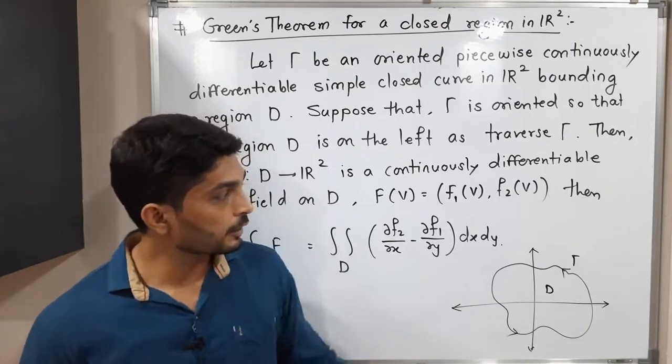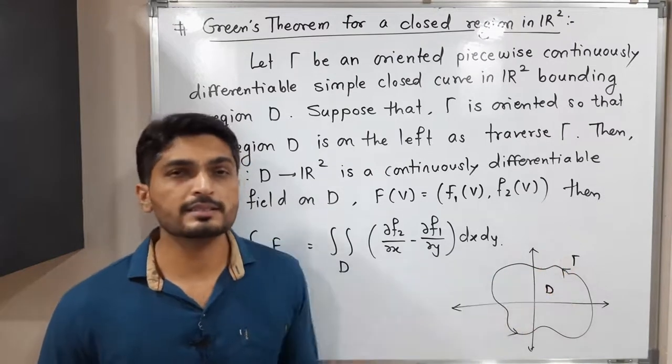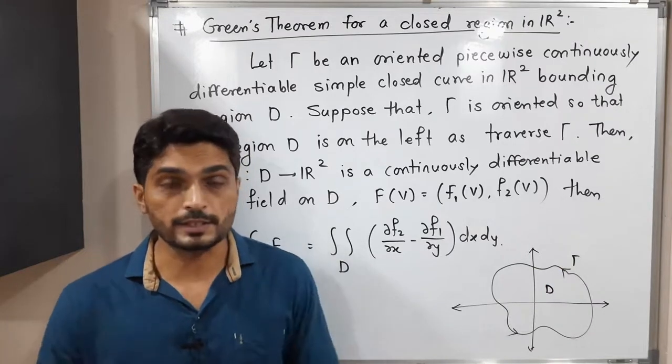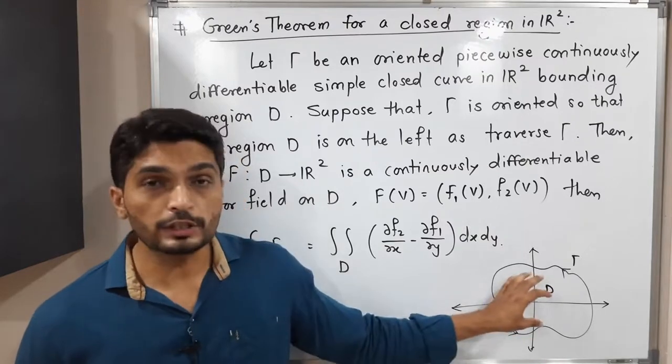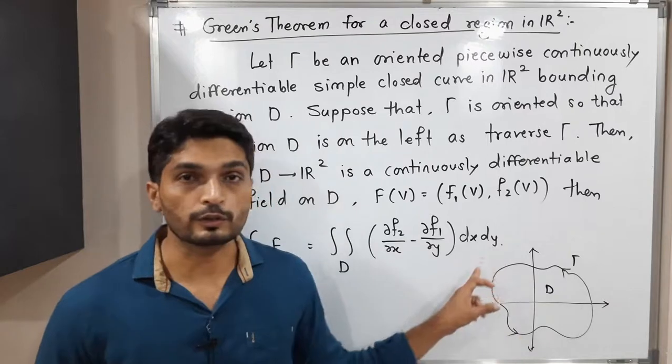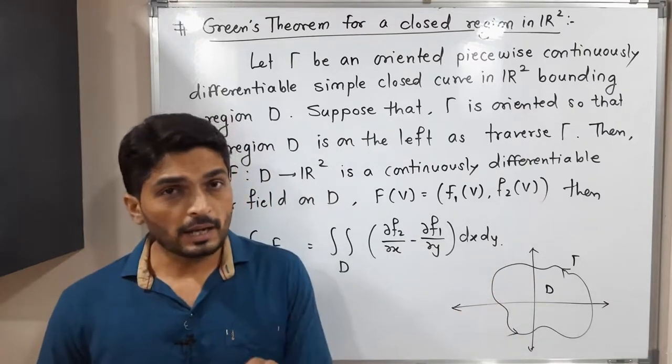Here we have a closed curve gamma—it's a simple closed curve that does not intersect itself other than its endpoints. Some region D is bounded or enclosed by this closed curve gamma. Gamma is in anti-clockwise direction.